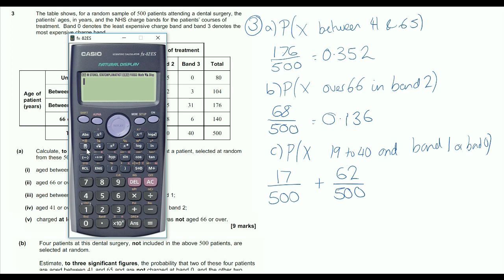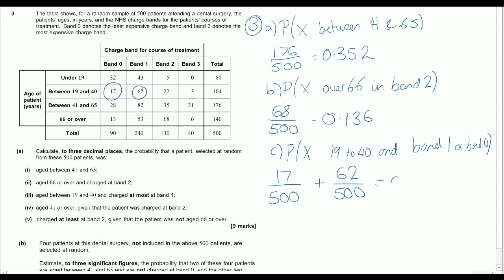So now we've got our two fractions to input. Plus 62 out of 500. And then we get 79 over 500, 0.158. So it's not conditional. It's not the first one is in band 0 and the second one is in band 1, which would mean we'd have to change our denominator. It's purely are they in the 17 or are they part of the 62.